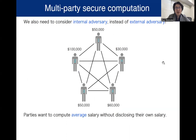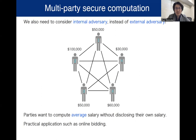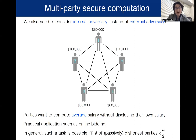Another important problem in cryptography is the problem of multi-party secure computation. Unlike encryption or authentication, in this problem we consider an internal adversary instead of an external adversary — the adversary is inside the legitimate network. For instance, parties want to compute average salary without disclosing their own salary. This is a kind of privacy problem, and it has practical applications such as online bidding. It is known that in general, such a task is possible if and only if the number of dishonest parties is less than half the number of parties.